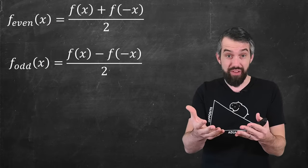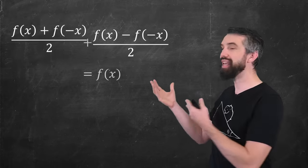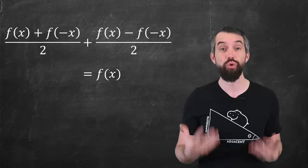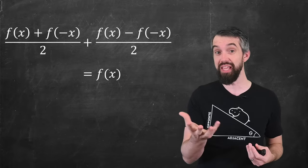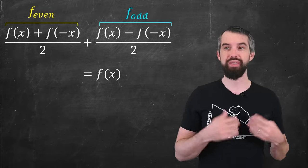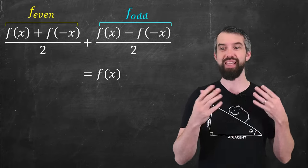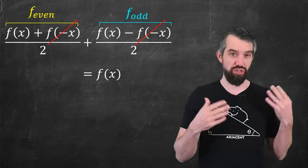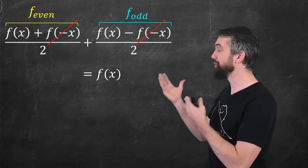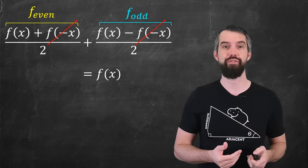What's cool about f-even and f-odd is that I can take any function f of x and write it as the sum of an even component and an odd component. Indeed, those f of negative x terms cancel, and you get two copies of f of x divided by 2, which is just f of x.